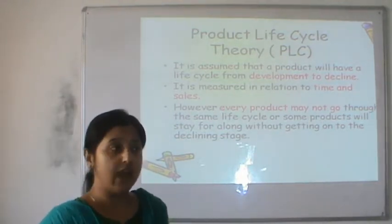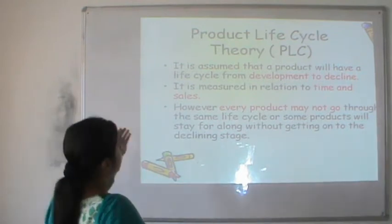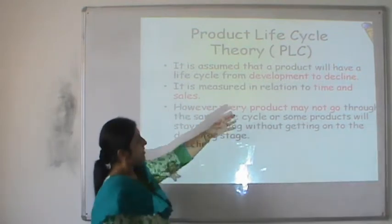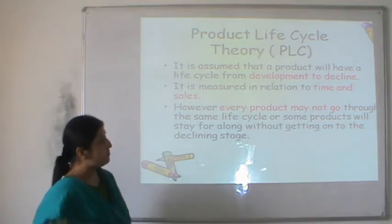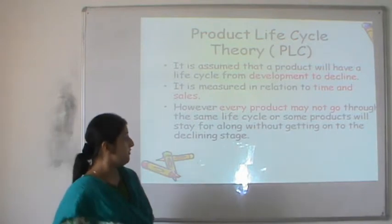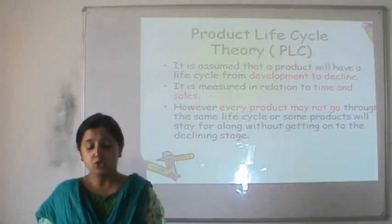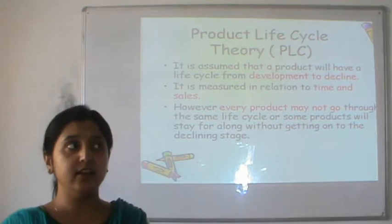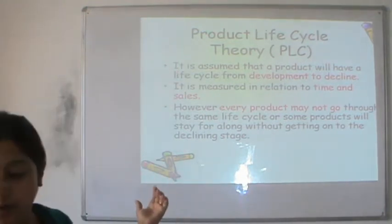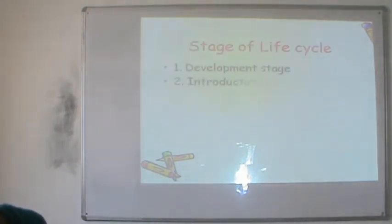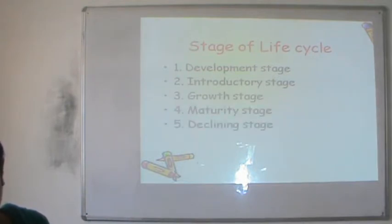Product life cycle is a graph that plots sales over a period of time. Importantly, not every product goes through the same life cycle — some products stay for long without heading into decline, while fashions come and go. A product life cycle passes through five stages: development, introduction, growth, maturity, and decline.